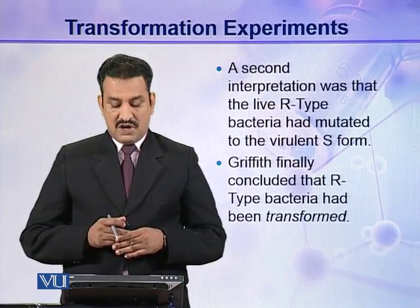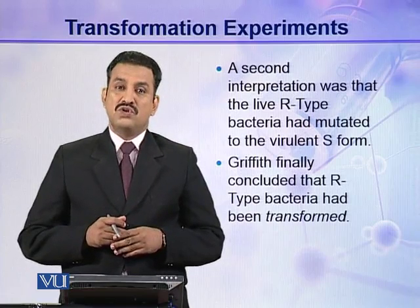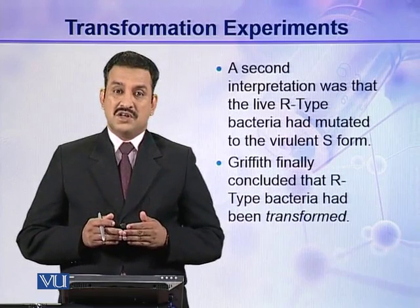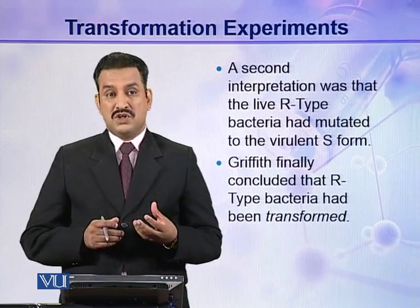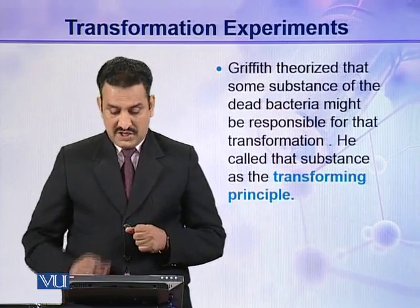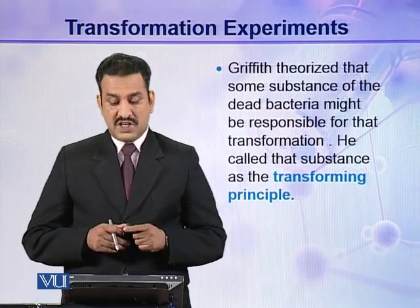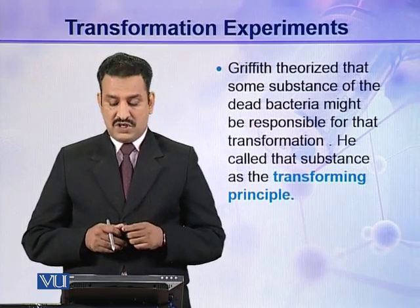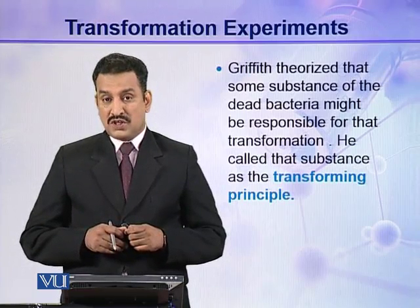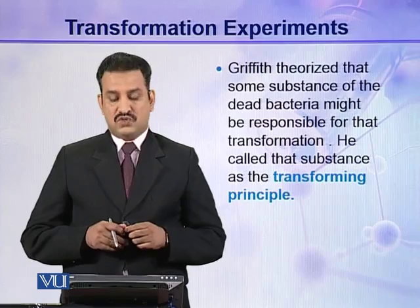Griffith finally concluded that R-type bacteria had been transformed. He could not clearly demonstrate how these bacteria were transformed or what substance was responsible for the transformation. He theorized that some substance from the dead S-type bacteria might be responsible for the transformation, and since he didn't know what that substance was, he called it the transforming principle.